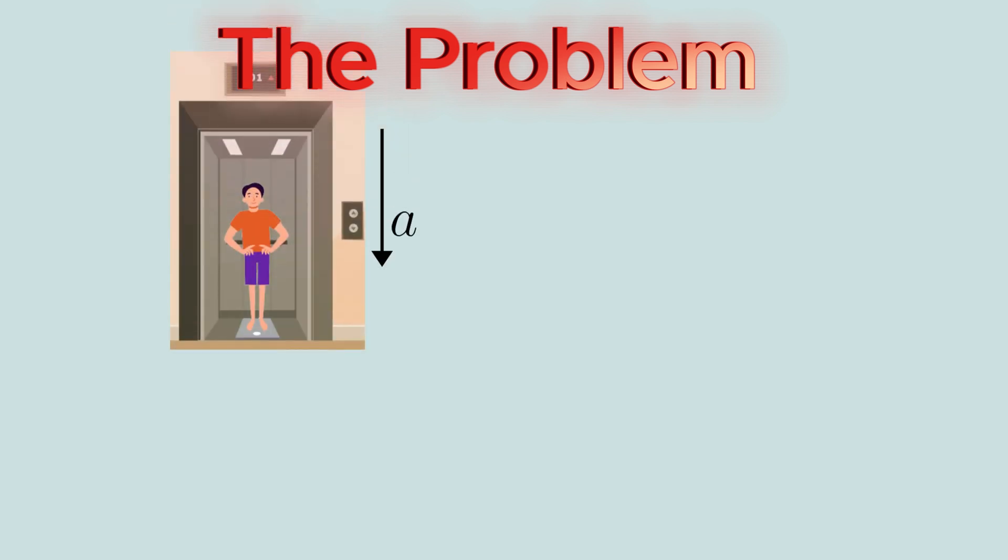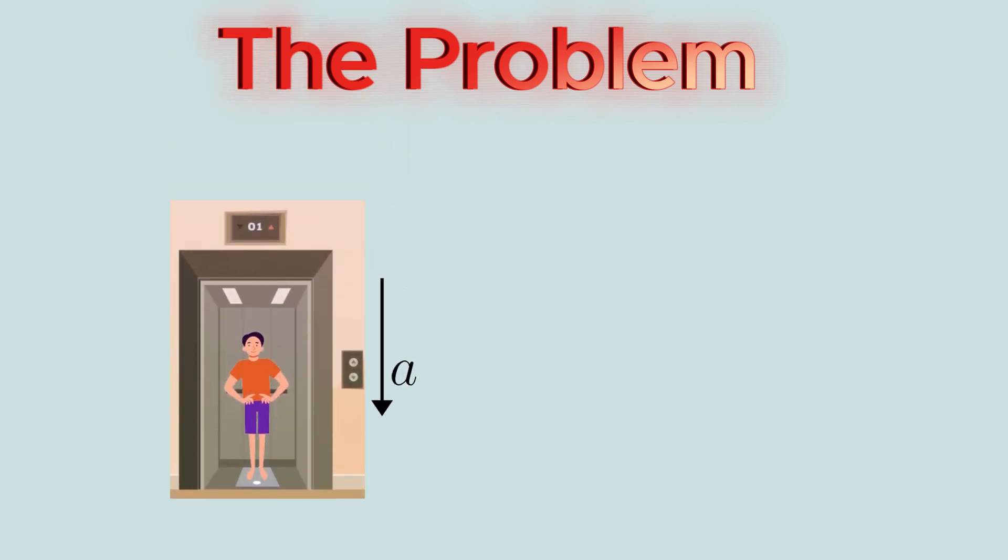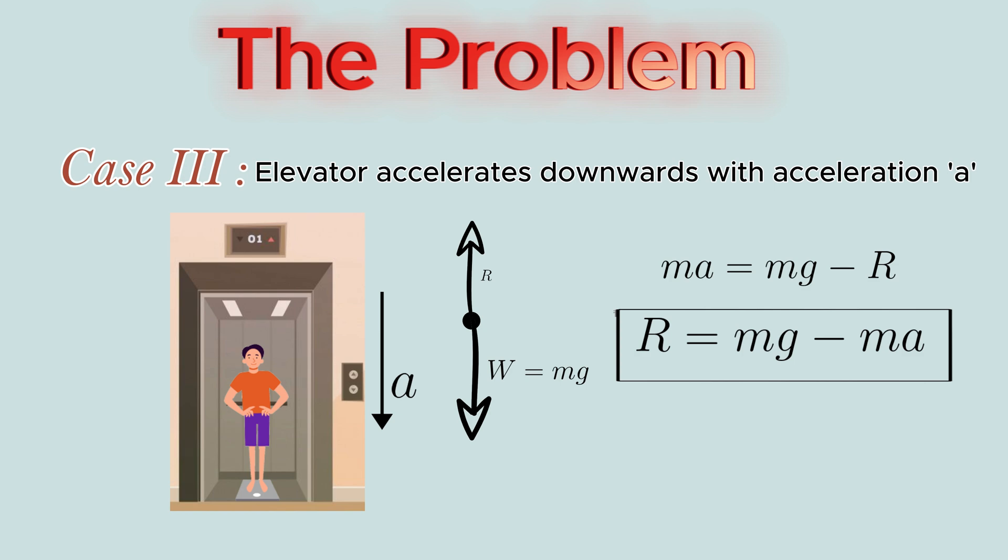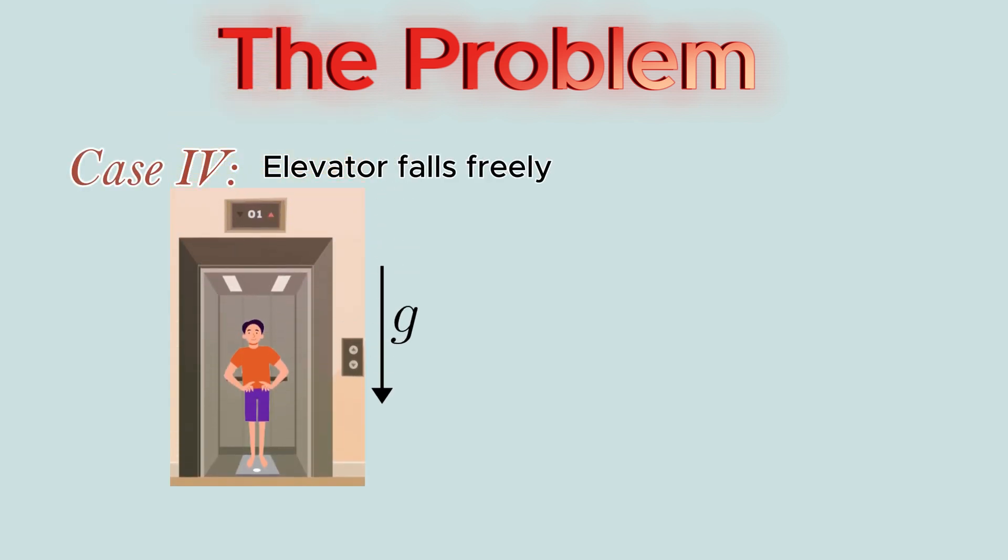In the third case, the elevator is accelerated downward with an acceleration a. Therefore, we can get the net downward force ma = mg - R. On transposing, we will get R = mg - ma. Therefore, the normal reaction is now decreased, and the weighing machine will show a lesser weight than the actual weight of the man.